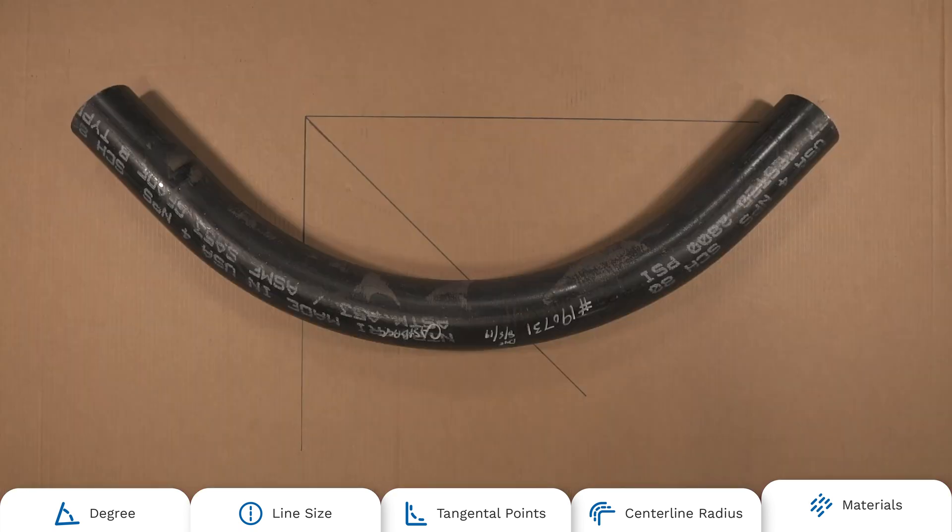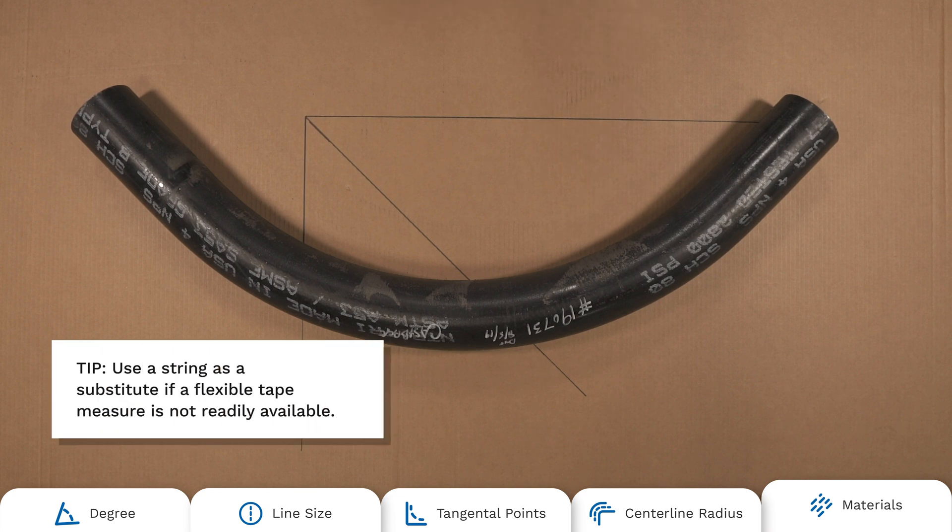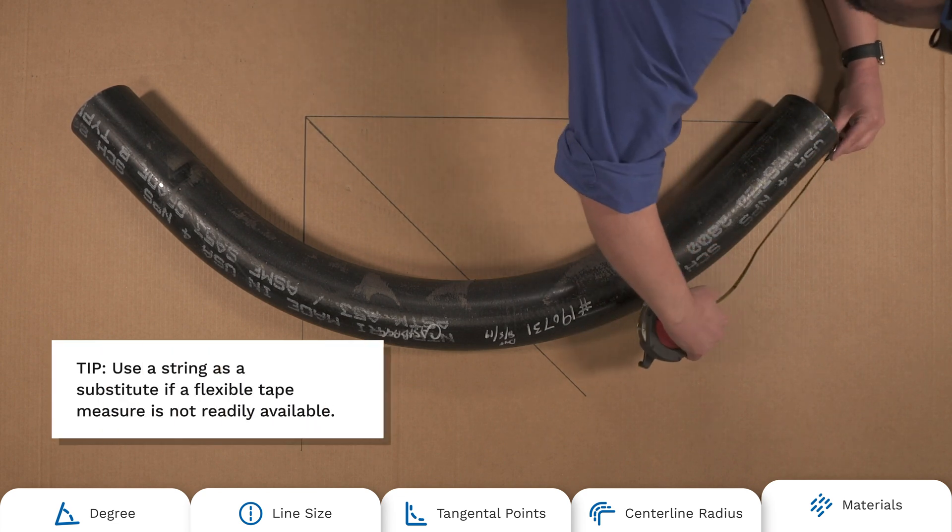Keep in mind, this works only if the elbow can be removed from your system. If it is still installed, it is trickier to measure but still possible, just not as accurate.